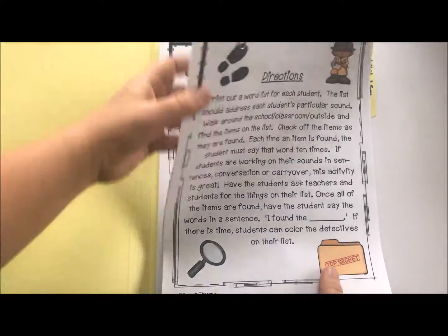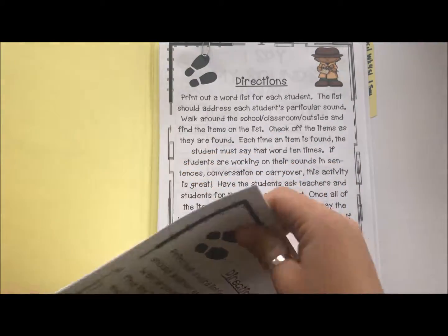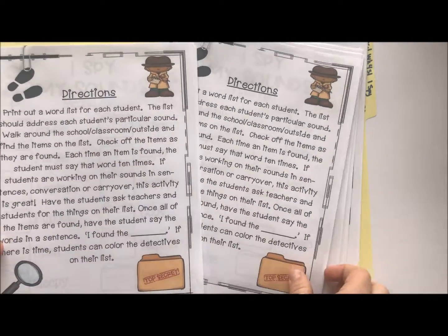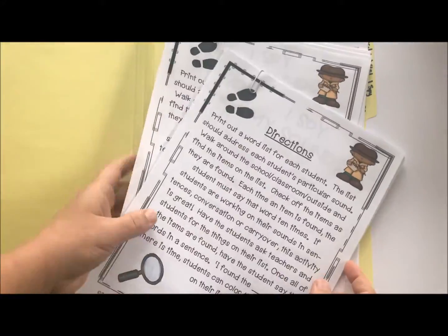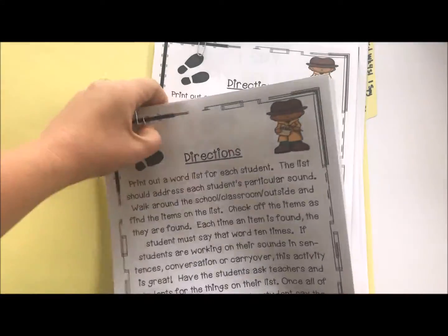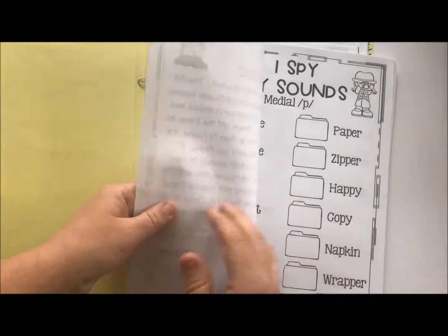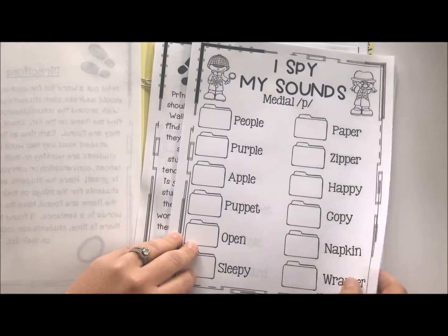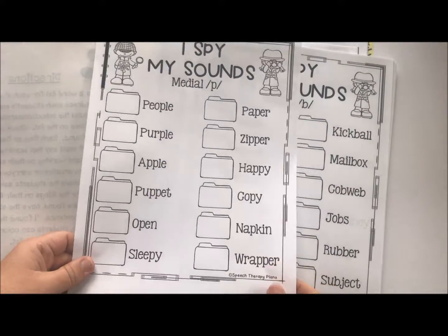You'll print out whatever pages you need. It comes in initial sounds, medial sounds, final sounds, and then language. Each student will get their own. For example, if they're working on their medial P sound, this is what they'll use.